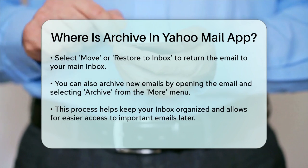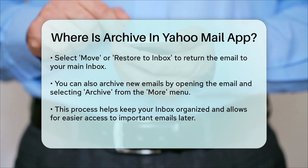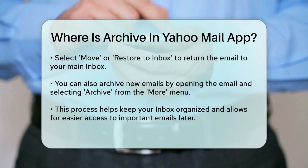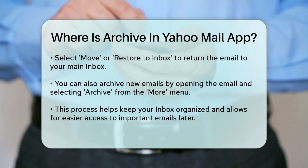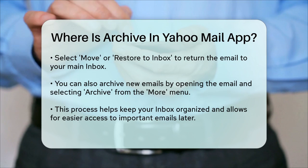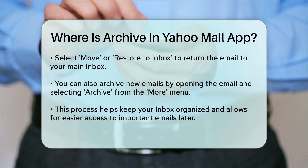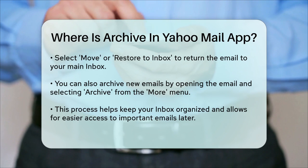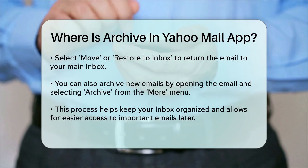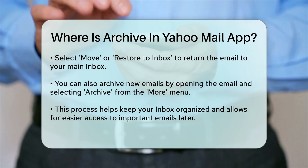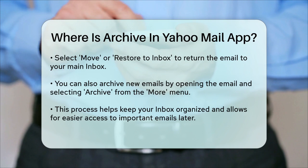So to sum it up, the Archive folder in the Yahoo Mail app is found by navigating to the menu, selecting the Archive folder, and from there you can view, read, or move your archived emails as needed. This helps keep your inbox tidy and makes it easier to find important emails later.